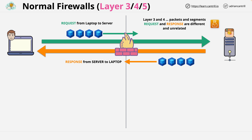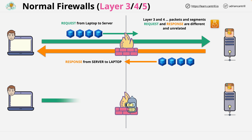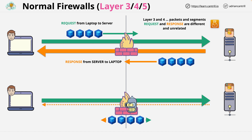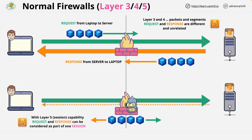If we enhance the firewall by adding session capability, then the same communication between the laptop and server can be viewed as one. The firewall understands that the request and response are part of the same session. This small difference reduces admin overhead — one rule instead of two — but it also lets you implement more contextual security, where you can treat response traffic differently than traffic in the same direction which is not a response.